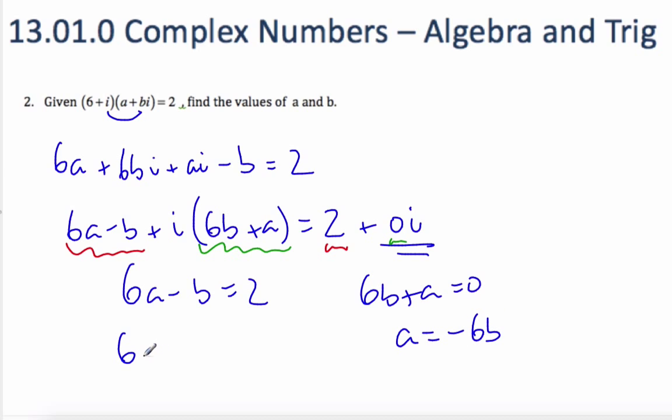Substitute that in, I get 6 times negative 6b minus b is equal to 2.